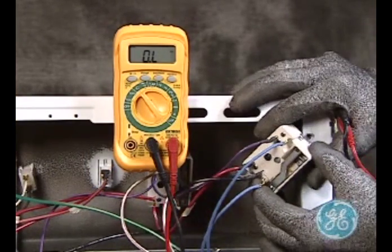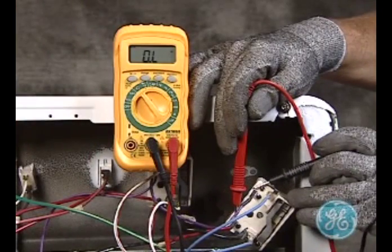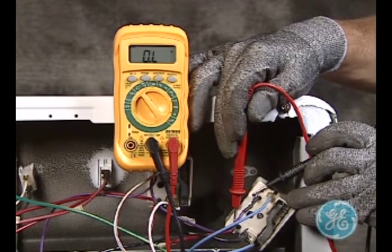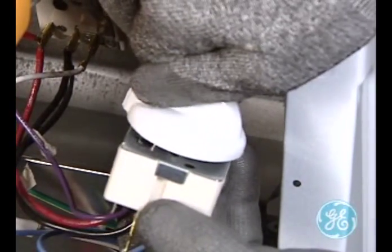you can test the indicator light contacts for resistance by first isolating the circuit. Note on the meter that the circuit is open and no contact is being made from terminals P to L1. That is because the switch is in the off position.